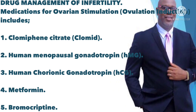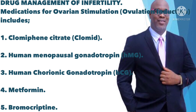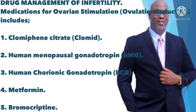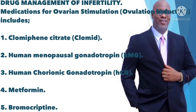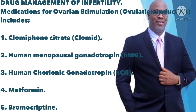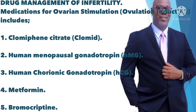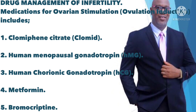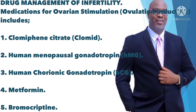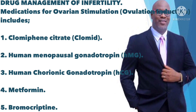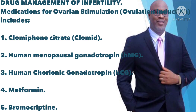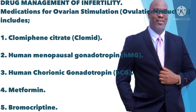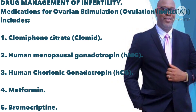2) Human menopausal gonadotropin (HMG). Instead of stimulating the pituitary gland to release more hormones, this injected treatment stimulates the ovary directly to produce multiple eggs. HMG is a fertility medication that contains the two types of gonadotropins produced by the human body: FSH and LH. HMG does what FSH and LH do — it regulates ovulation and encourages the growth of multiple eggs in the ovaries, in preparation for intrauterine insemination (IUI), also known as artificial insemination.